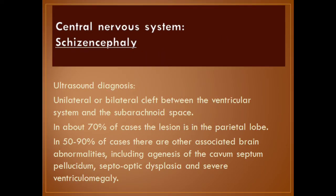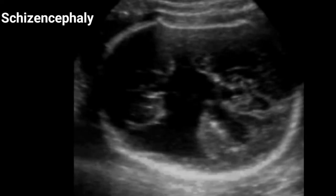Schizencephaly — ultrasound diagnosis: it is a unilateral or bilateral cleft between the ventricular system and the subarachnoid space. In about 70% of cases, the lesion is in the parietal lobe. Between 50 and 90% of cases have other associated brain abnormalities, including agenesis of the cavum septum pellucidum, septo-optic dysplasia, and severe ventriculomegaly.